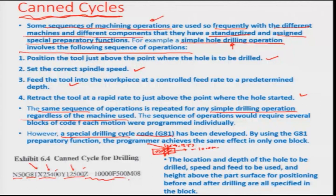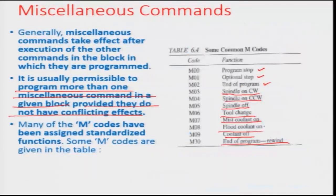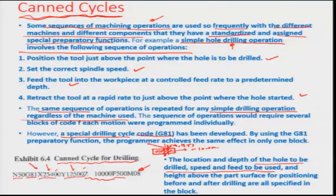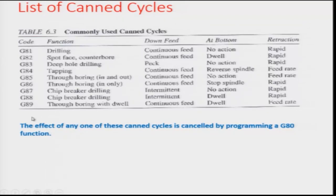In this way, the whole sequence is programmed under one line. The location and depth of the hole to be drilled, the speed and feed, and the height above the part surface for positioning before and after drilling are all specified in that one block. The code is designed to automatically understand the X, Y, and Z values and the sequence at which G81 needs to be executed. Many other commonly used canned cycles include spot facing, counter boring, deep hole drilling, tapping, boring, chip-breaker drilling, and through boring with dwell.